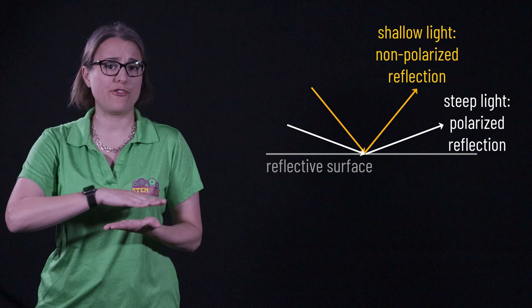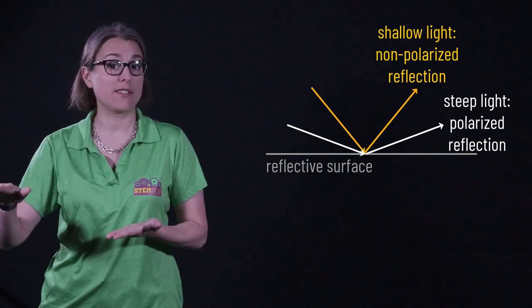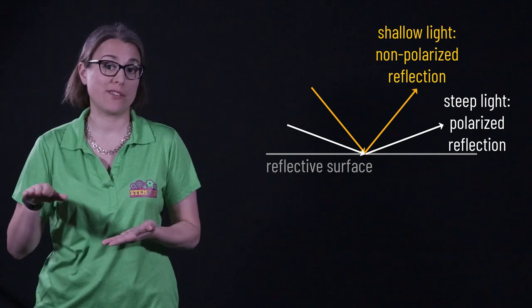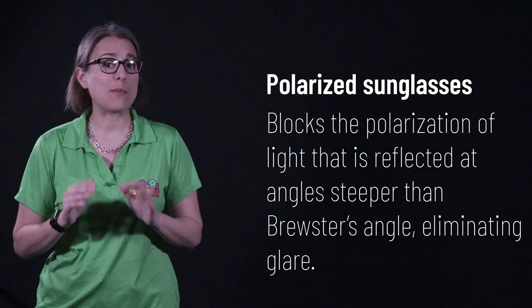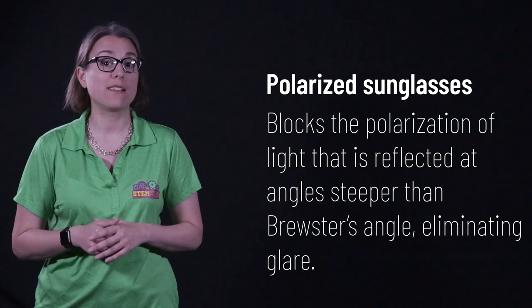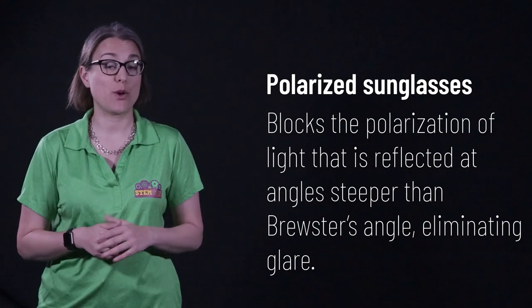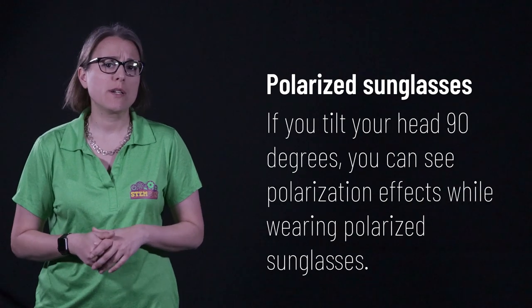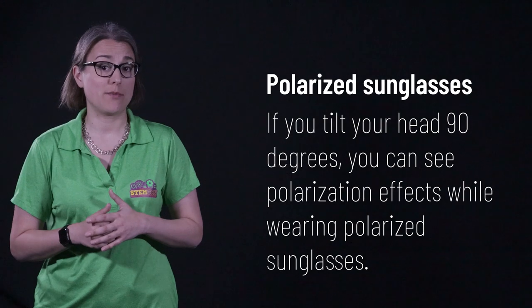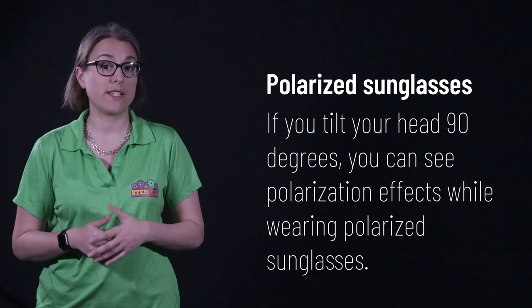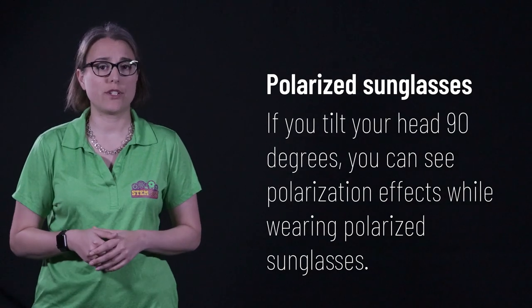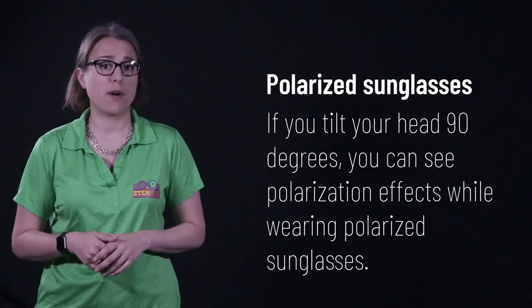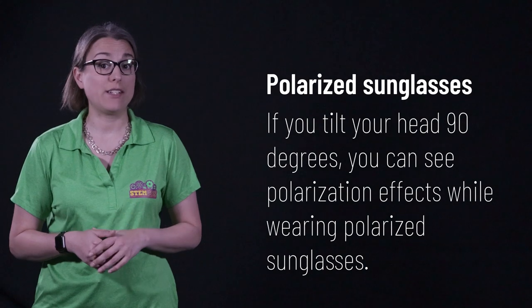Perhaps you own polarized sunglasses. Light that reflects off of a surface at a very steep angle — at an angle greater than something known as Brewster's Angle — will have only one polarization of light. The other polarization of light does not reflect. This means that any polarizing filter that blocks that reflected light will eliminate glare from steeply angled reflections. This is what polarized sunglasses do. When wearing polarized sunglasses, it can be very obvious when you look at something that generates polarized light such as LCD screens. By tilting your head 90 degrees while wearing polarized sunglasses, you can see polarization effects. Not only do LCD screens and monitors have polarization effects, but so do heat treated windshields in cars.